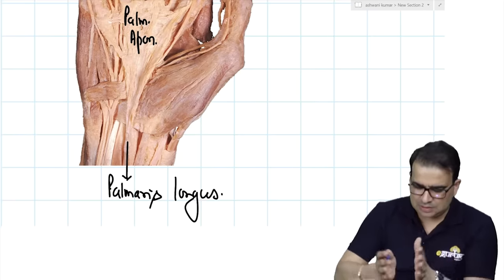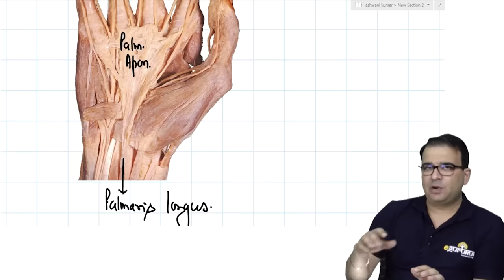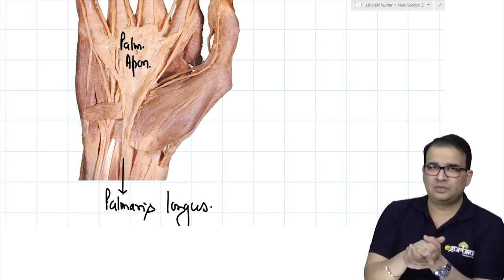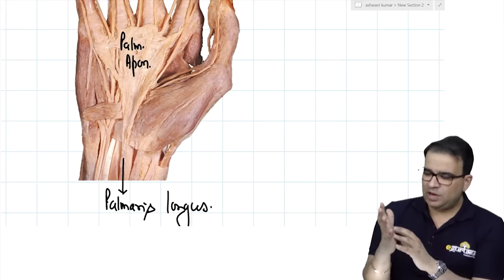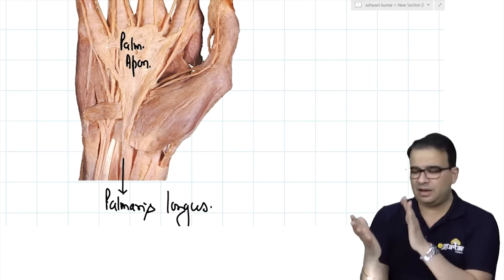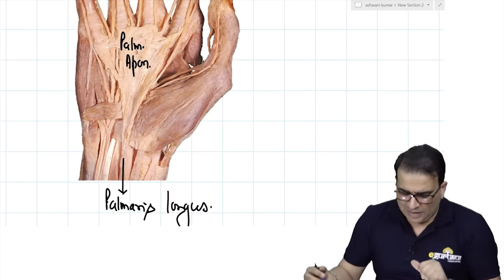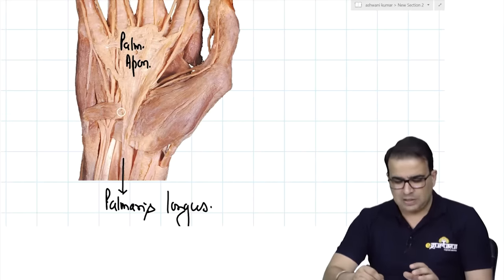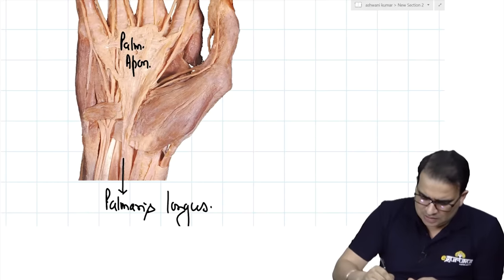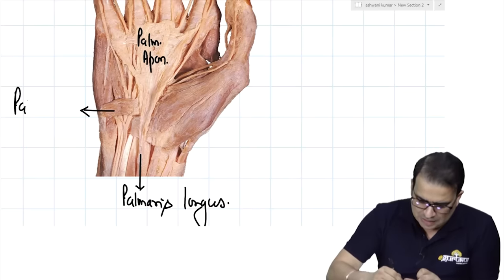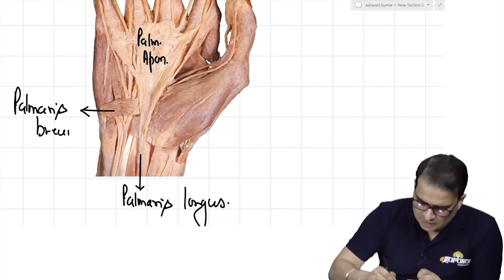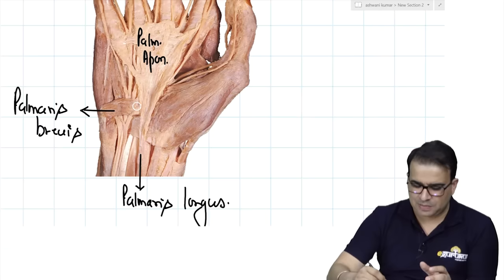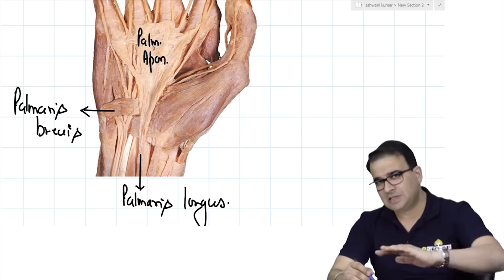The palmar aponeurosis is a triangular protective structure, similar to the plantar aponeurosis in the foot, protecting the many nerves and blood vessels in the hand and helping maintain the arches. A superficial muscle visible on the ulnar side is the palmaris brevis — one of the hypothenar muscles, frequently absent, with no bony attachment, more or less horizontally placed. It is very superficial and all nerves and vessels pass deep to it.